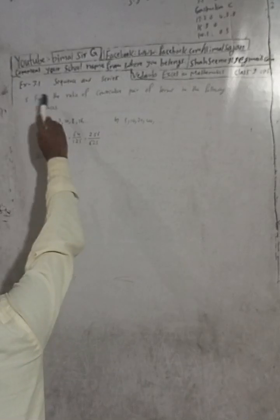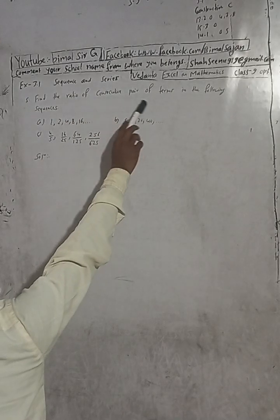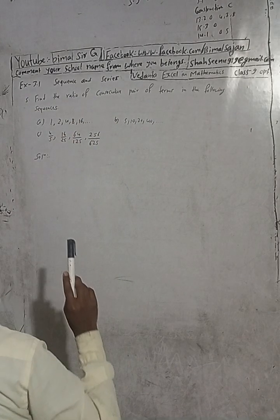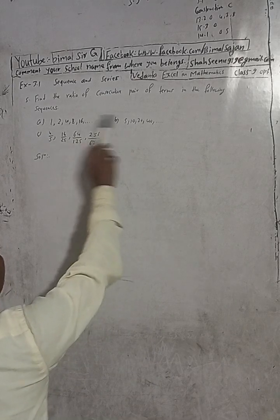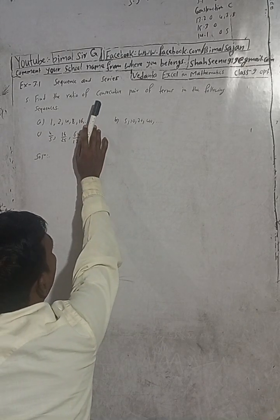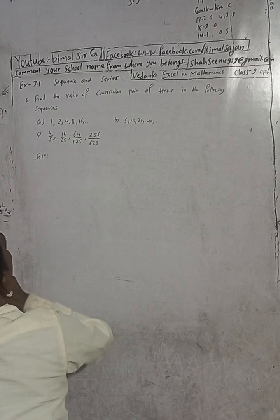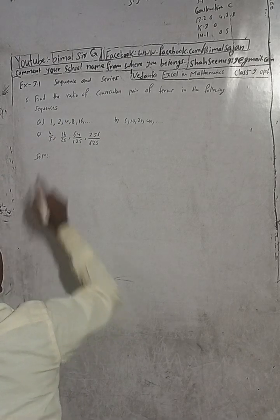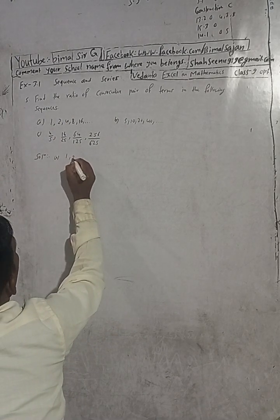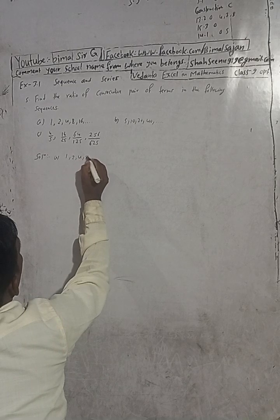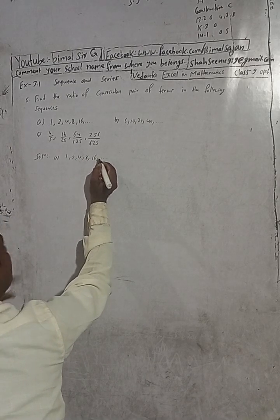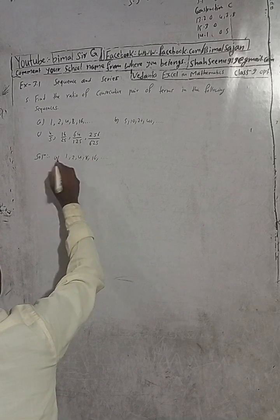Now the question is: find the ratio of consecutive pairs of terms in the following sequence. There are three sequences given in this question related to geometric series.